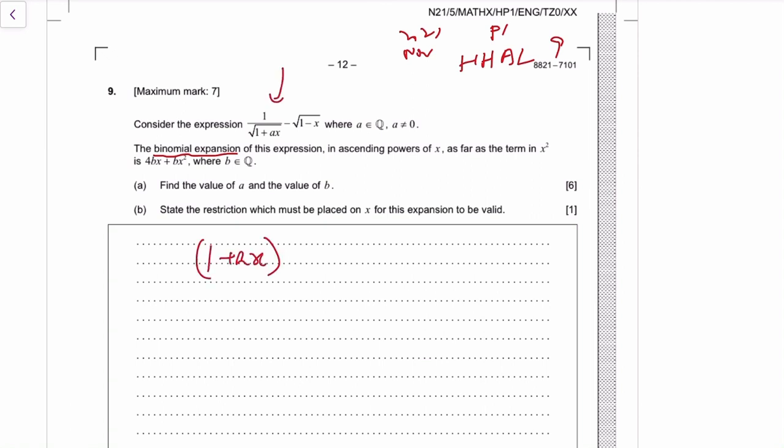Of something of non-positive integer power. For example, this one has power negative half, the second one has power half. They want expansion up to the x squared term, so you simply do the expansion of each of them up to x squared and then minus.